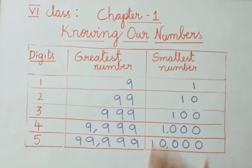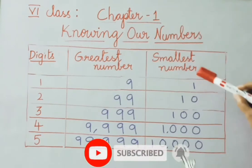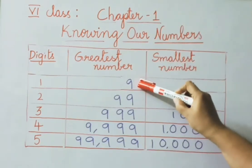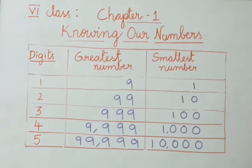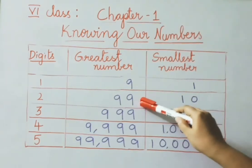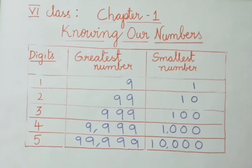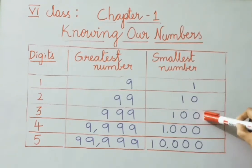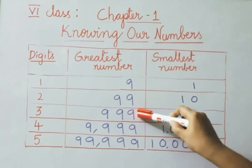Greatest number and smallest number. A 1-digit number starts from 1 and ends with 9, so the smallest 1-digit number is 1 and the greatest is 9. A 2-digit number starts from 10 and ends with 99, so the smallest 2-digit number is 10 and the greatest is 99. A 3-digit number starts with 100 and ends with 999, so the smallest is 100 and the greatest is 999.